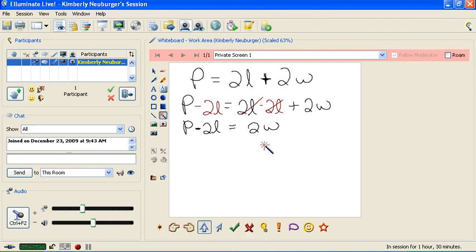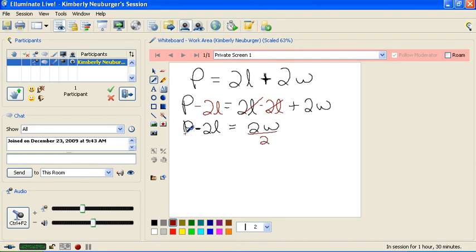we would need to move the 2 here, which is being multiplied by the W. And the opposite of multiplying is dividing. So what we're going to do is divide both sides by 2. And on this side, we're going to divide everything by 2, which you can divide each item separately by 2 or do a fraction bar with the 2 underneath, as you see here.